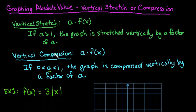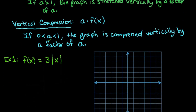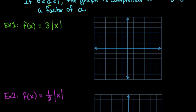A negative value causes a reflection. So if you had a negative number, it would reflect over the x- or y-axis depending upon where the negative value is. For the first example we have here, this is going to be a vertical stretch since 3 is greater than 1.